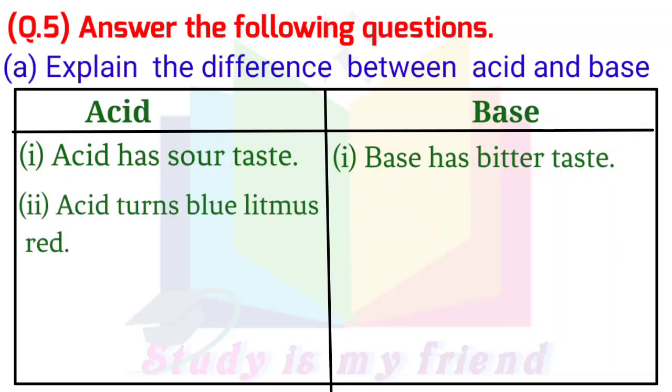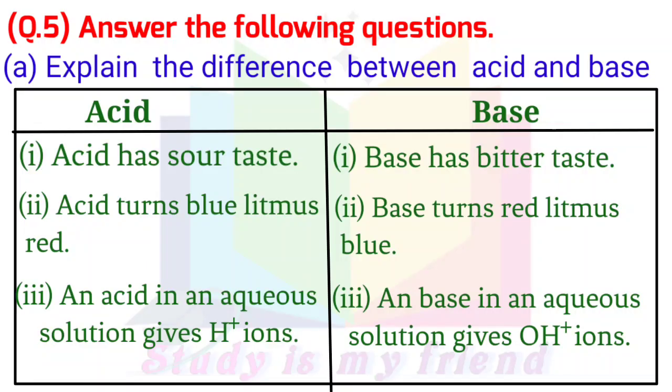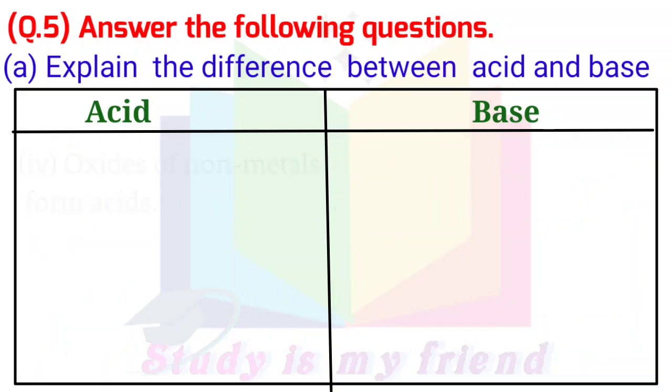Acid turns blue litmus red. An acid in an aqueous solution gives H+ ions. A base in an aqueous solution gives OH- ions. Oxides of non-metals form acids.